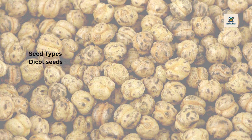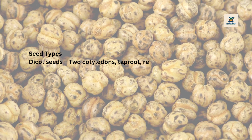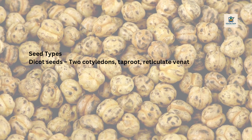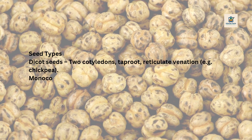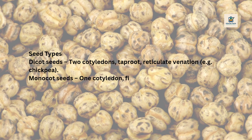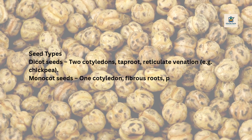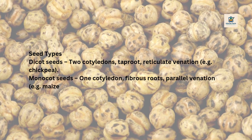Dicot seeds have two cotyledons, taproot, and reticulate venation, e.g. chickpea. Monocot seeds have one cotyledon, fibrous roots, and parallel venation, e.g. maize.